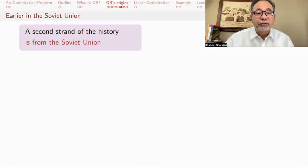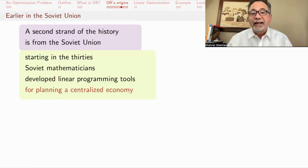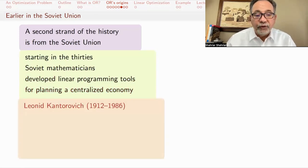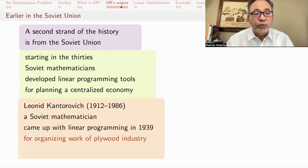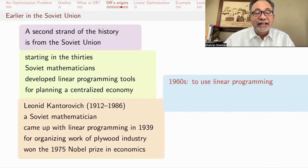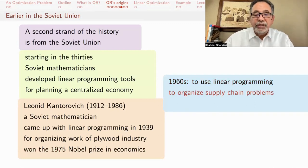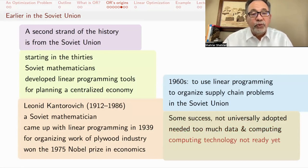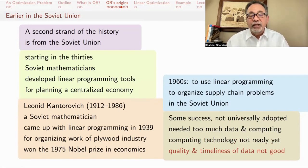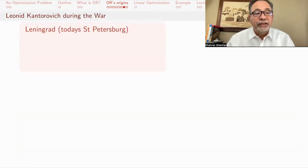There's a second strand of the history coming from the Soviet Union. Starting in the 30s, so before the war, Soviet mathematicians developed linear programming tools for planning a centralized economy. A key figure is Leonid Kantorovich, the Soviet mathematician, and he came up with linear programming in 1939, a number of years before Dantzig, and he was trying to organize the work of the plywood industry. He won the Nobel Prize in Economics in 1975 for his work on linear programming. In the 1960s, they tried to use it to organize supply chain problems in the Soviet Union. There was some success, but it wasn't universally adopted because it needed too much data and computing. By the time they got all the data they wanted, the data was already outdated. A good idea, but at the wrong time.